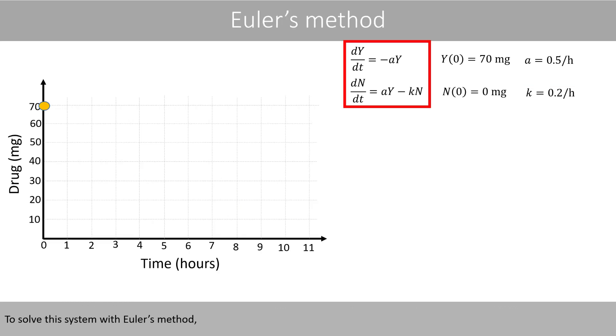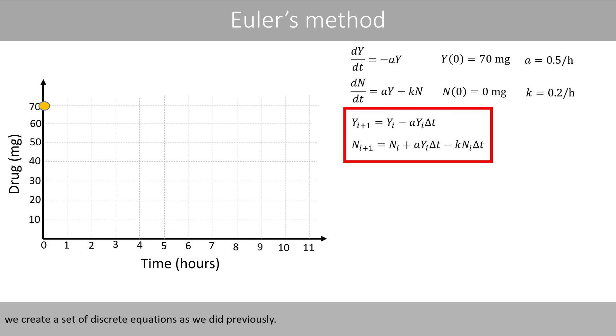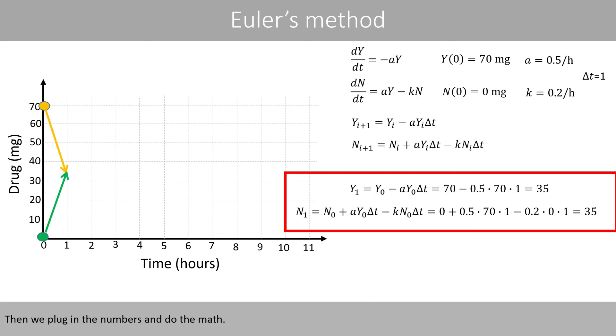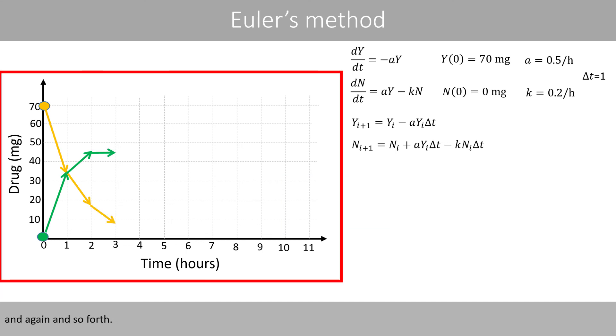To solve this system with Euler's method, we create a set of discrete equations as we did previously. Note that these terms correspond to these. Then we plug in the numbers and do the math. Then we update the numbers and calculate again. And again, and so forth.